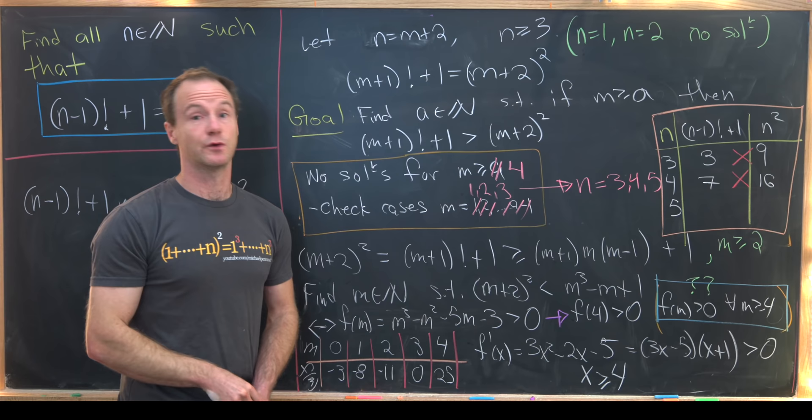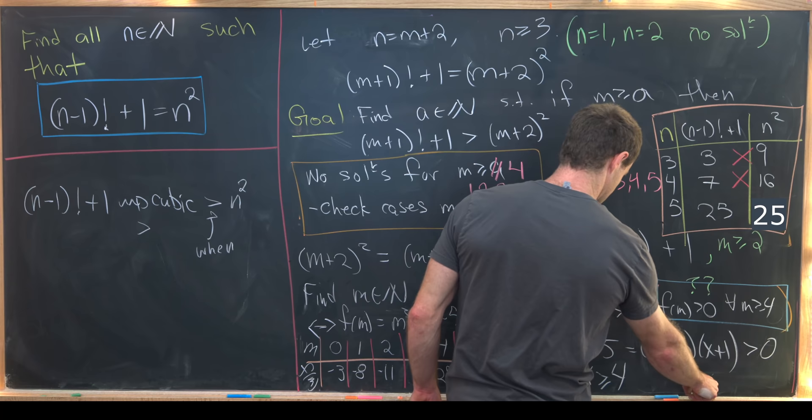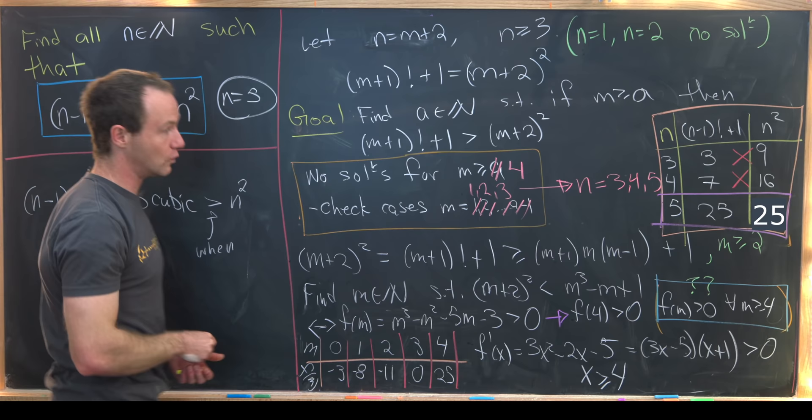So we've got one last chance for a solution and that's n equals 5. We plug that into here we get 4 factorial which is 24 plus 1 is 25 and 5 squared is obviously equal to 25 as well.